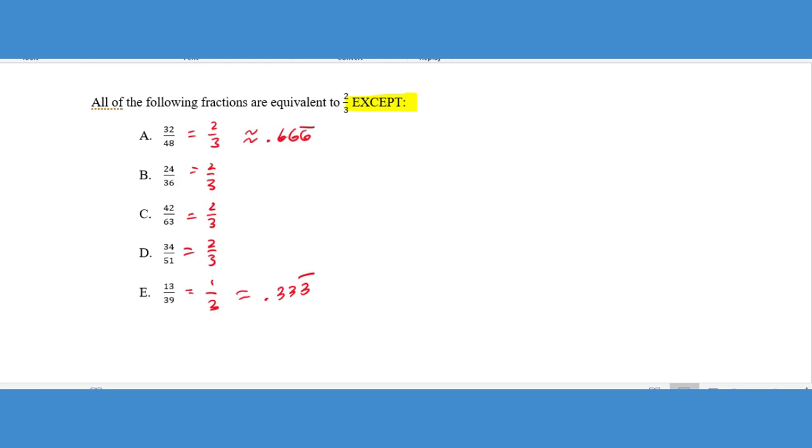So since we're looking for the one that is not equal to two thirds, E is our obvious answer. Now, this is not meant to be difficult. The ACT is just verifying that you understand fractions in general, and then possibly also verifying that you know how to use your calculator to create equivalent fractions. So take advantage of these problems very early on.